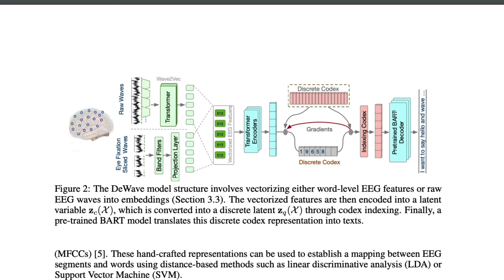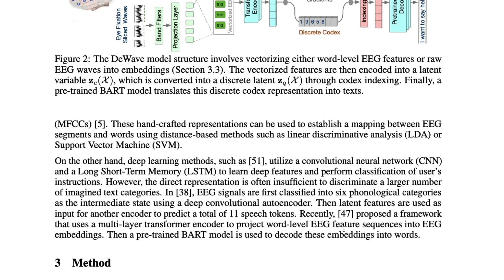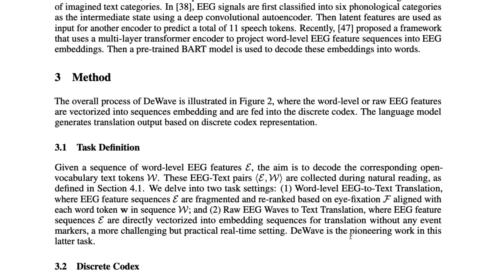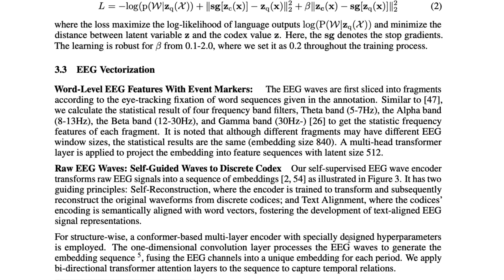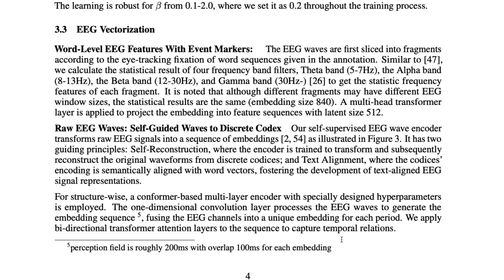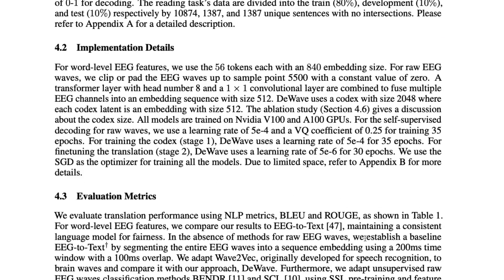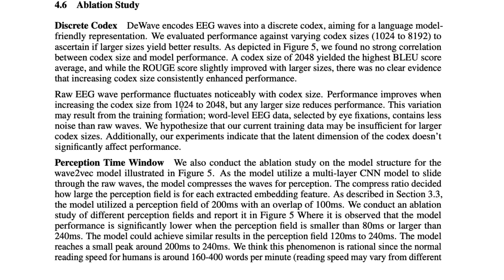They are using two kinds of large language models: one is BART, a bi-directional large language model, and then a left-to-right model like ChatGPT or similar. Overall, they've gone into really good implementation details — for example, they used 56 tokens each with 840 embedding size, among many other specifics. I don't understand this domain deeply — I'm not a neuroscience specialist — but they've gone into really good detail about how everything is implemented.